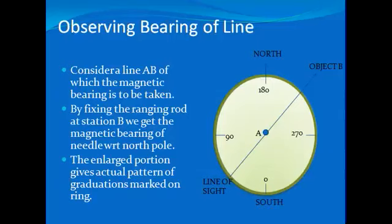Now, to measure the bearing of object B with respect to A, consider line AB for which the magnetic bearing is to be taken. By fixing the ranging rod at station B, we get the magnetic bearing needle with respect to north pole. The enlarged portion gives the actual pattern of graduations marked on the ring.